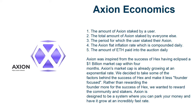1. The amount of Axion staked by a user. 2. The total amount of Axion staked by everyone else. 3. The period for which the user staked their Axion. 4. The Axion flat inflation rate, which is compounded daily. 5. The amount of ETH paid into the auction daily.